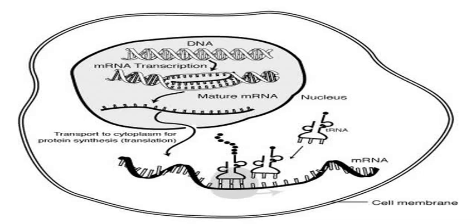A 5' cap is a modified guanine nucleotide that has been added to the front or 5' end of a eukaryotic messenger RNA shortly after the start of transcription. The 5' cap consists of a terminal 7-methylguanosine residue that is linked through a 5'-5' triphosphate bond to the first transcribed nucleotide. Its presence is critical for recognition by the ribosome and protection from RNases. Cap addition is coupled to transcription and occurs co-transcriptionally, such that each influences the other.